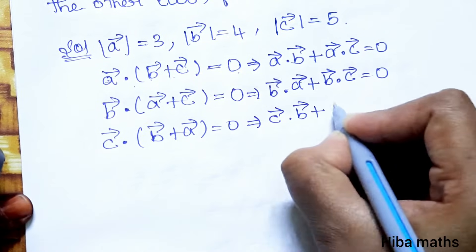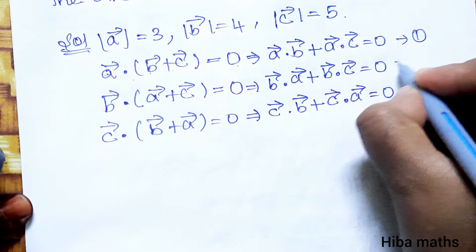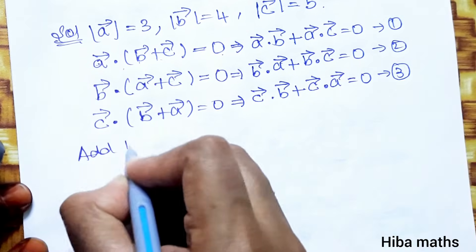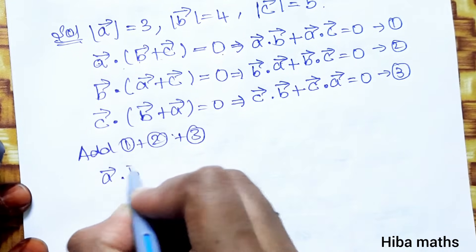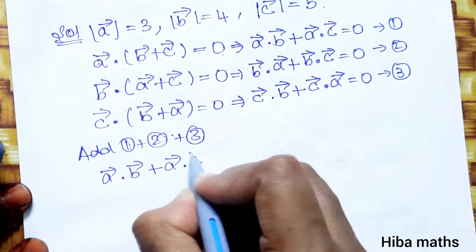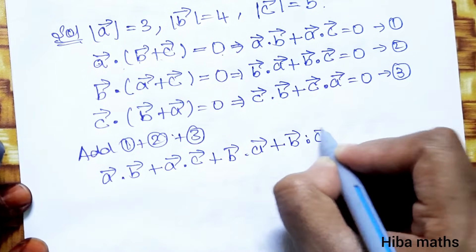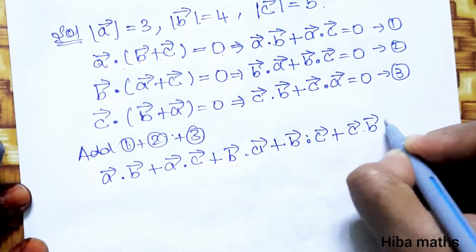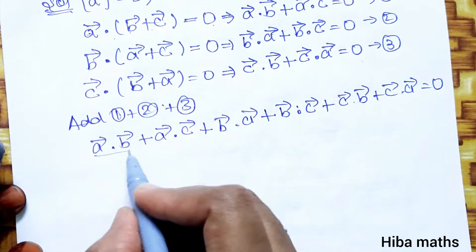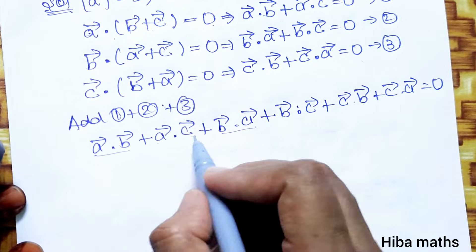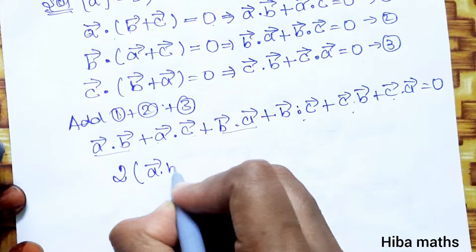Now we expand. We write: a vector dot b vector + a vector dot c vector + b vector dot a vector + b vector dot c vector + c vector dot b vector + c vector dot a vector = 0. Now, since a·b = b·a and so on, we identify pairs: a·b appears twice, a·c appears twice, b·c appears twice. So this gives 2 times of a vector dot b vector plus b vector dot c vector.